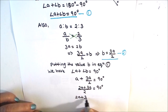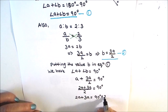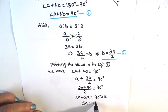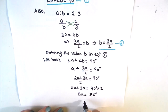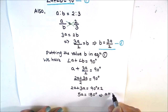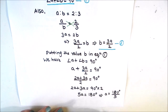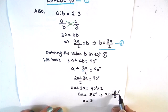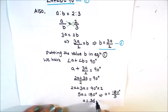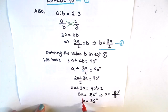So 5A equals 90 degrees times 2, which gives 5A equals 180 degrees. Therefore A equals 180 divided by 5, which equals 36 degrees. We have found the value of A as 36 degrees.